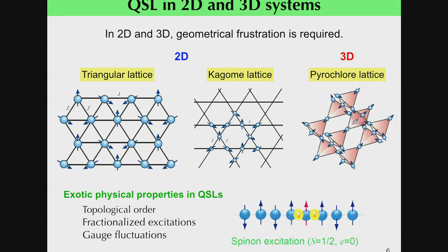However, the situation is much more complicated in two and three dimensions. It is widely believed that geometric frustration is necessary for realizing the quantum spin liquid state in two- or three-dimensional systems. Well-known examples of geometrically frustrated lattices include the two-dimensional triangular and Kagome lattices, and the three-dimensional pyrochlore lattices. Although a spin liquid is difficult to capture, it exhibits several exotic physical properties such as topological order, fractionalized excitations such as spinons, and gauge fluctuations.